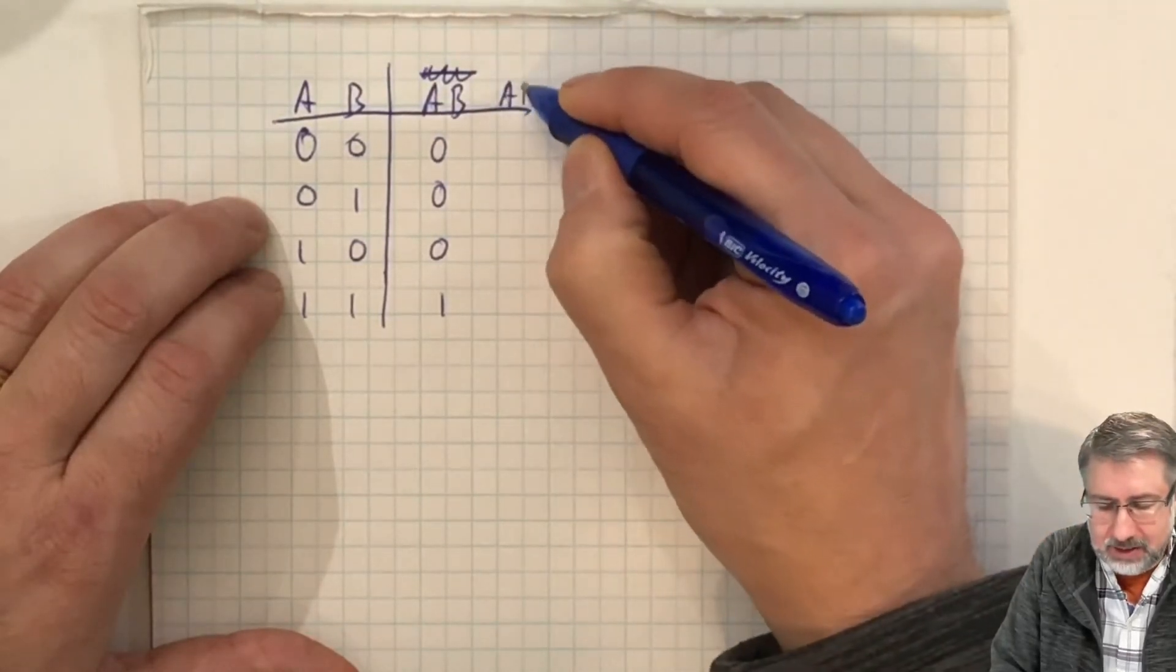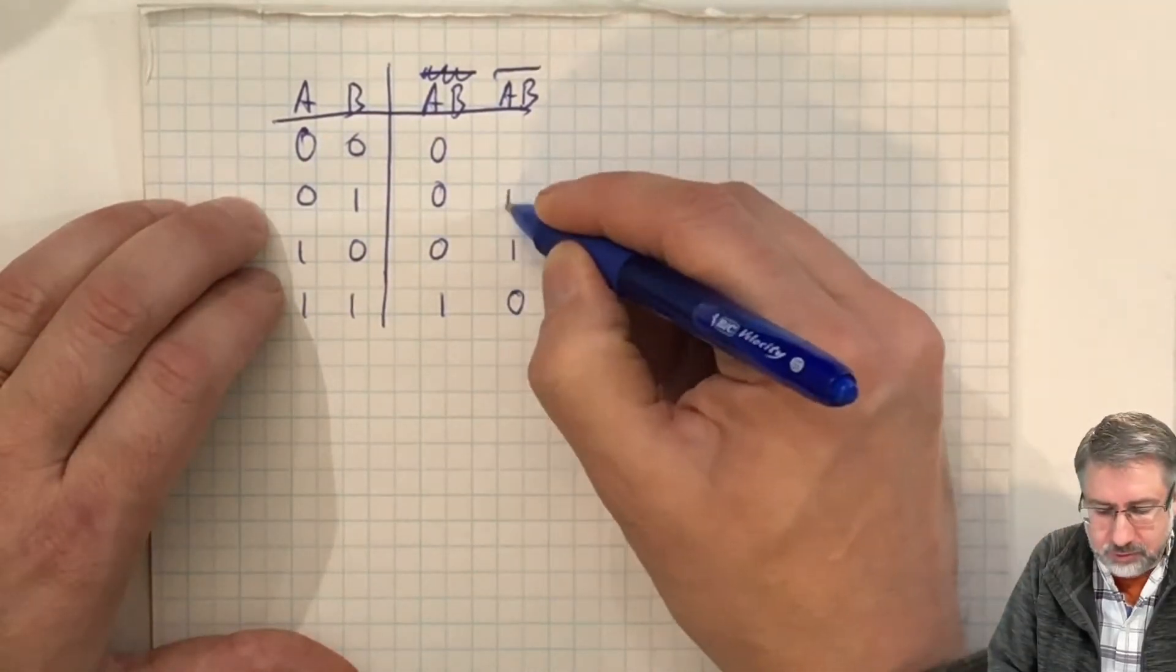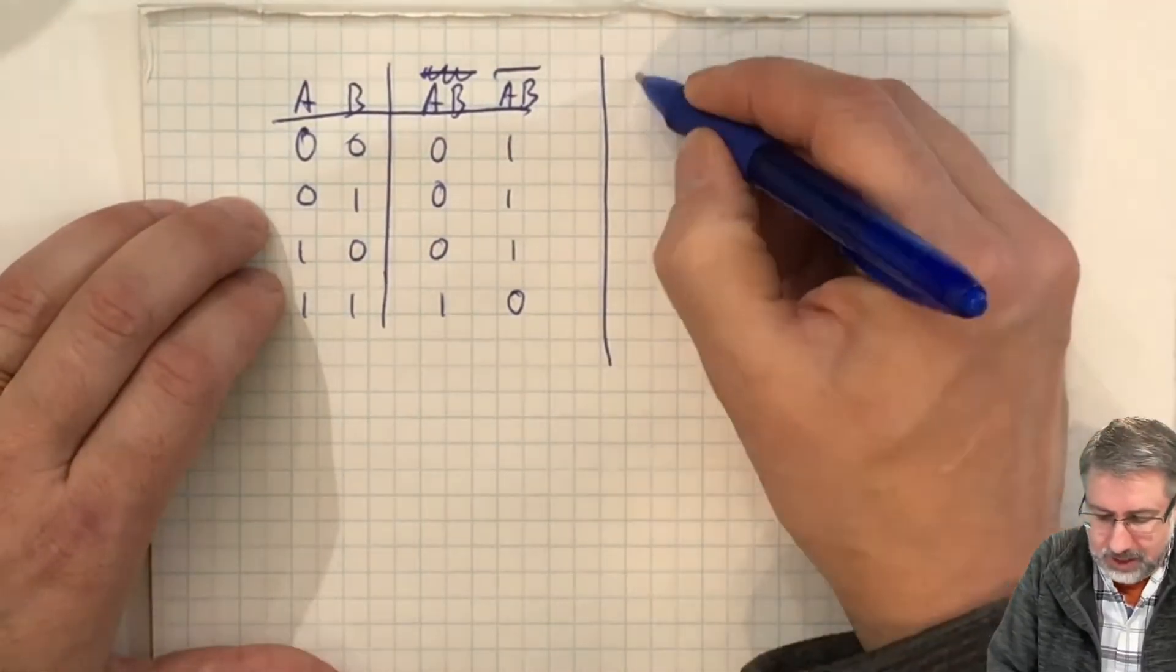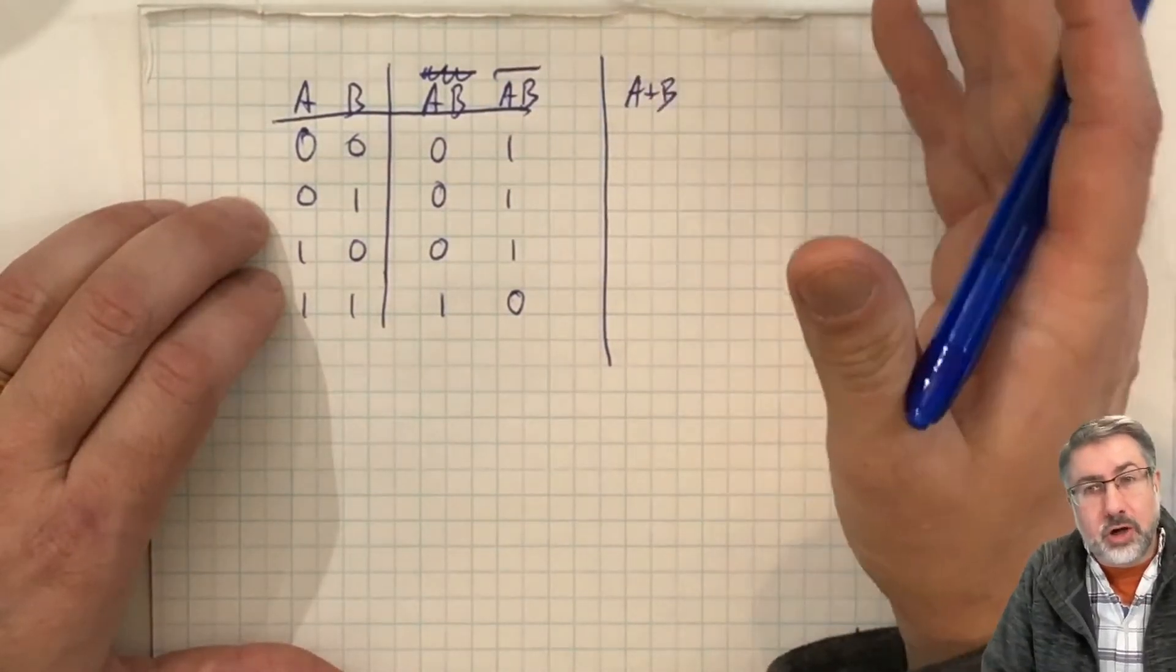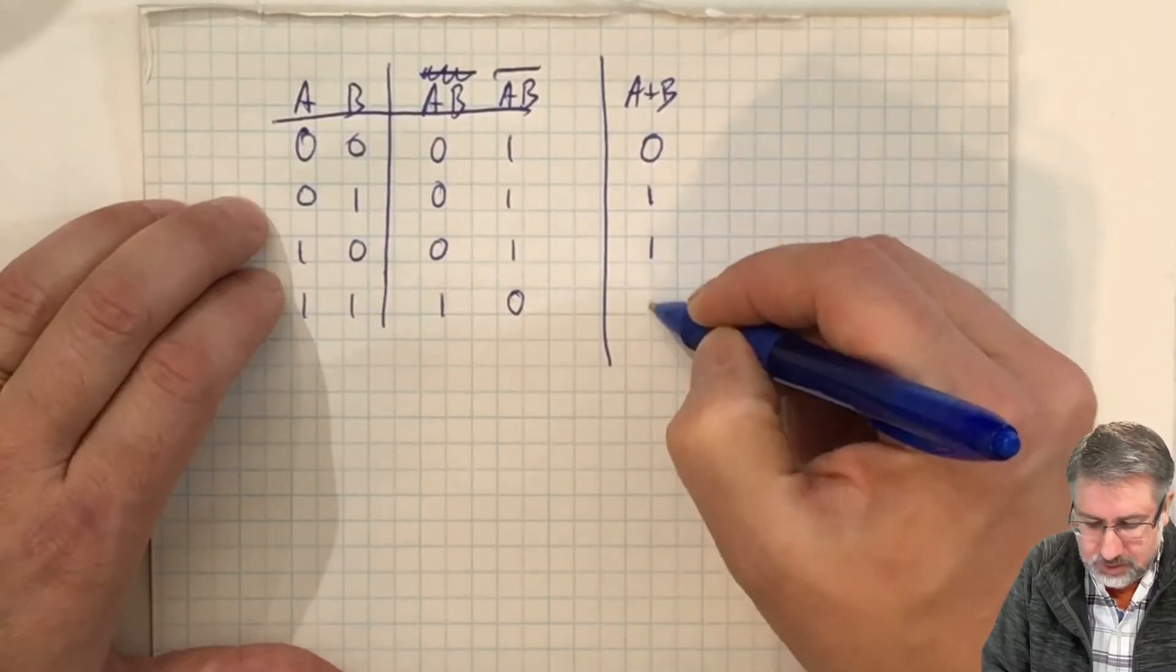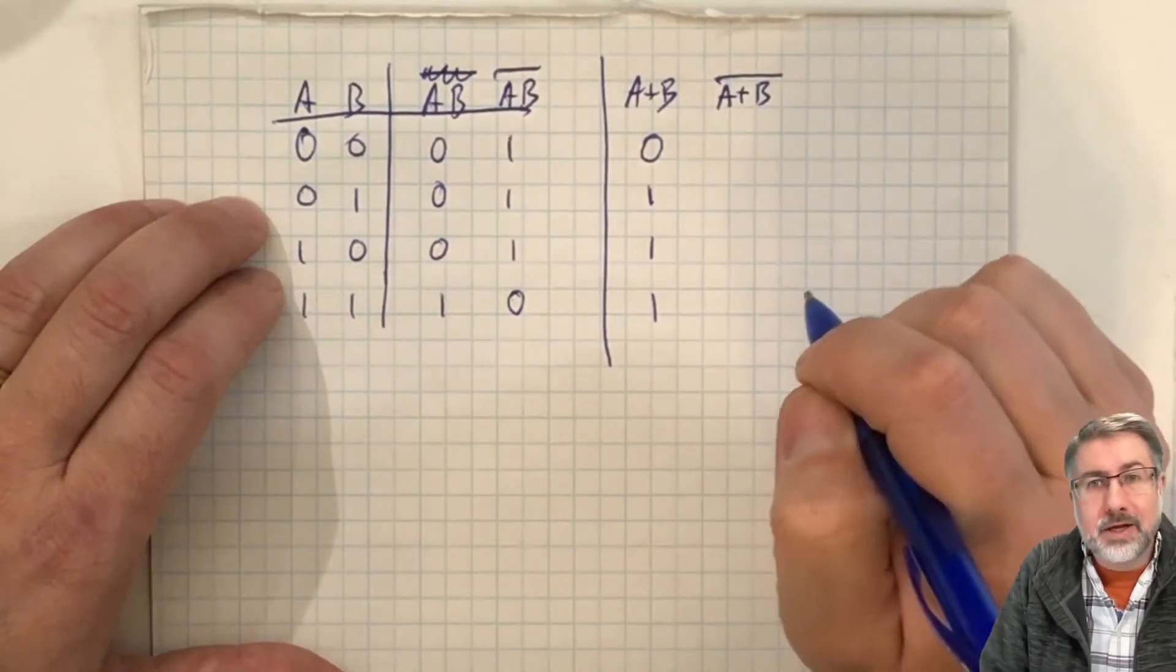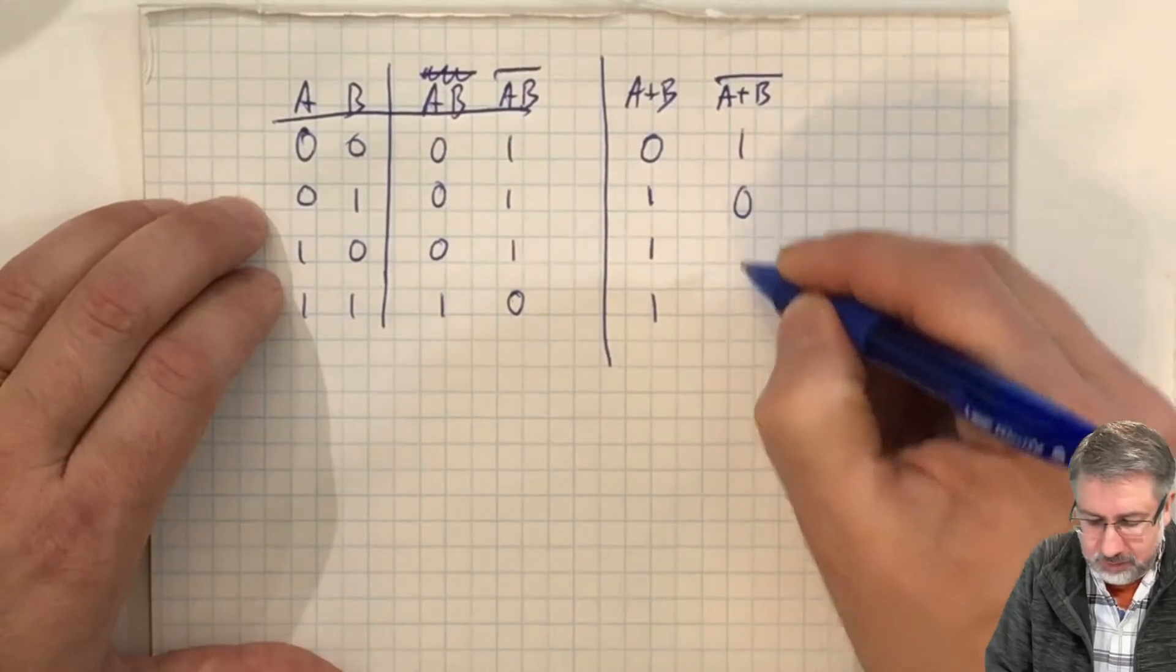Similarly, NOR—we can say A or B is false only when everything is false, which is here, and true everywhere else. And then NOR, A nor B, is true where everything is false, and false everywhere else.